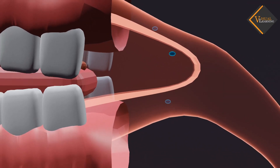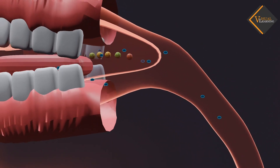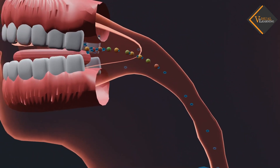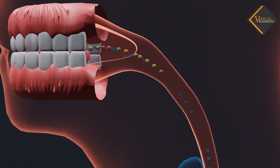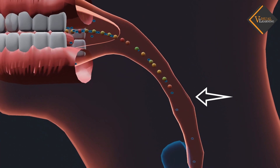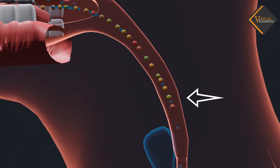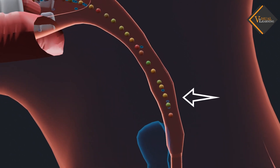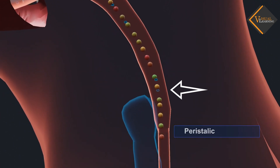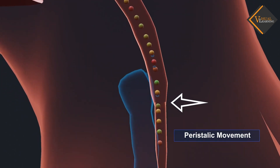It is necessary to move the food in a regulated manner along the digestive tube so that it can be processed properly in each part. The lining of the canal has muscles that contract rhythmically in order to push the food forward. These peristaltic movements occur all along the gut.